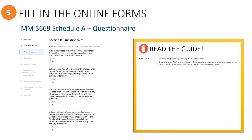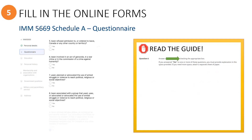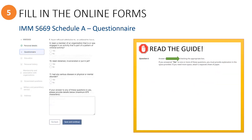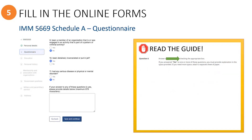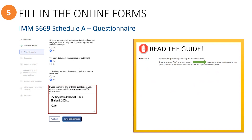This is the questionnaire section where you will simply click on either yes or no for each response. As you can see, there are quite a few questions to answer. If you answered yes for any of the questions, you must provide details in the space provided at the end of the questions. Then click the Save and Continue button.